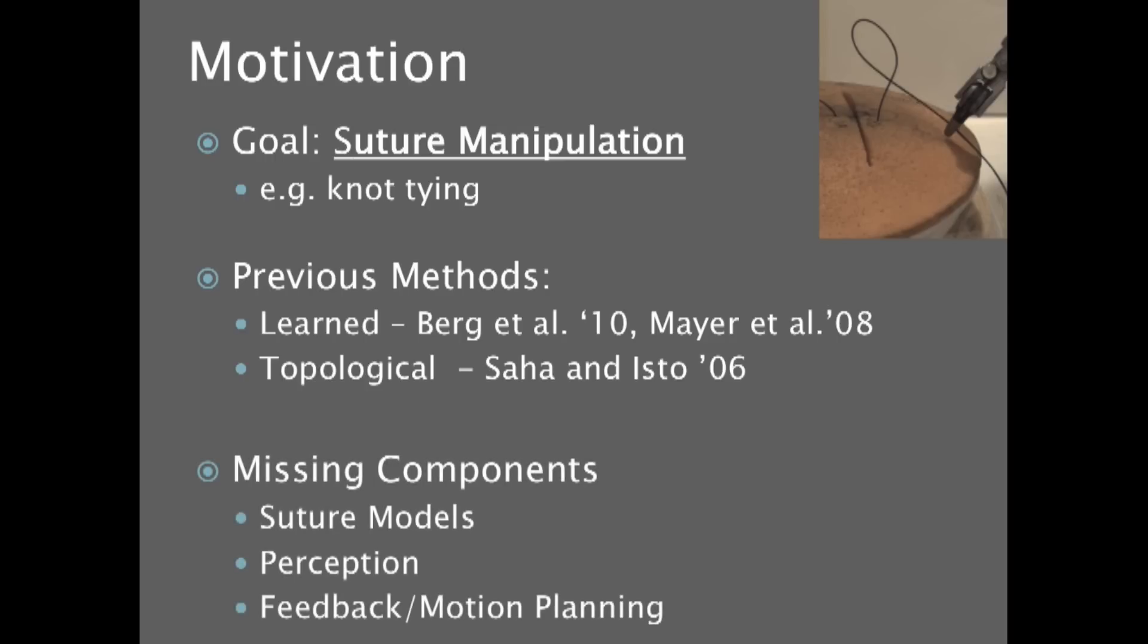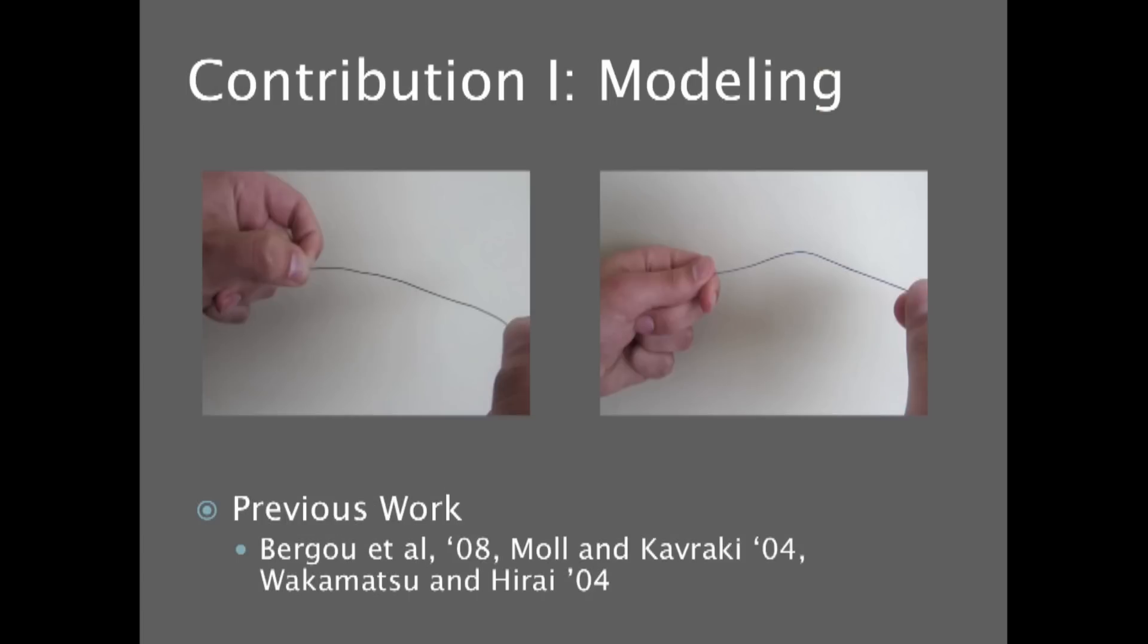So really, what these works are missing in order for reliable manipulation is, first of all, an understanding of how the suture behaves in the system, a system for perception, and ultimately, feedback and motion planning. So in order to approach these, what we're going to do is, first, we're going to build up a model for reliable manipulation of suture.